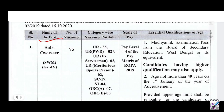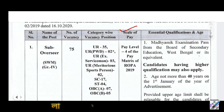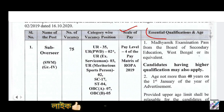Here we have the name of the post which is Sub-Overseer. The total vacancy is 75. Here we have the category-wise vacancy, which is broken down for general, SC, ST, and OBC categories.